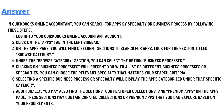Look for the section titled Browse Category. Option four: under the Browse Category section, you can select the option Business Process. Option five: clicking on Business Process will present you a list of different business processes or specialties, and you can choose the relevant specialty that matches your search criteria.